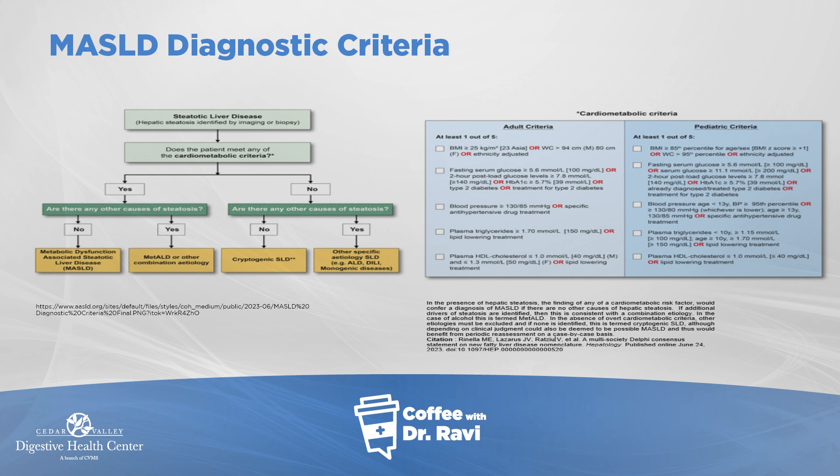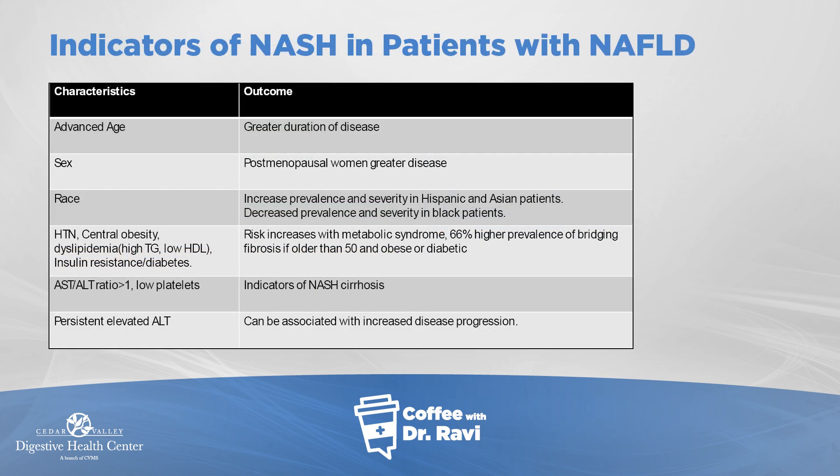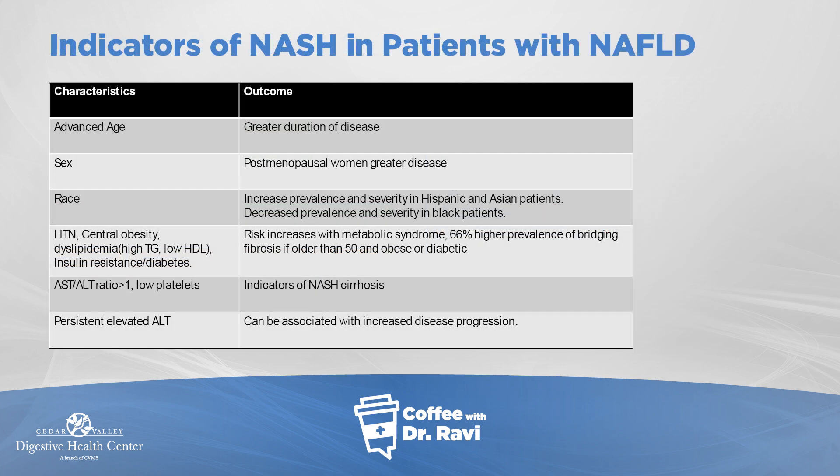Other factors that cause faster progression include an elevated AST to ALT enzyme ratio, low blood platelets on a blood count — which can indicate progression — and persistently elevated liver tests. These are the groups of patients that tend to advance to scar tissue more quickly.